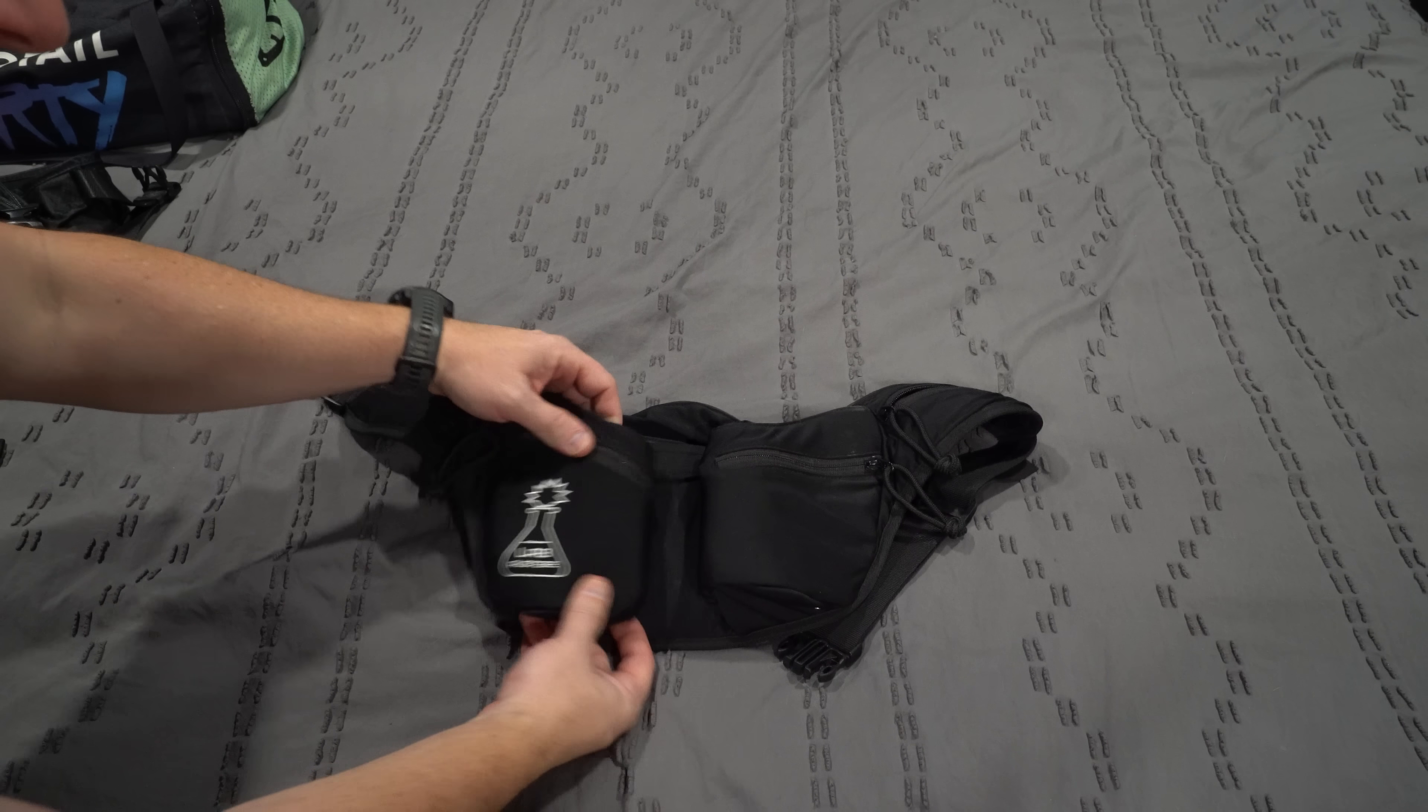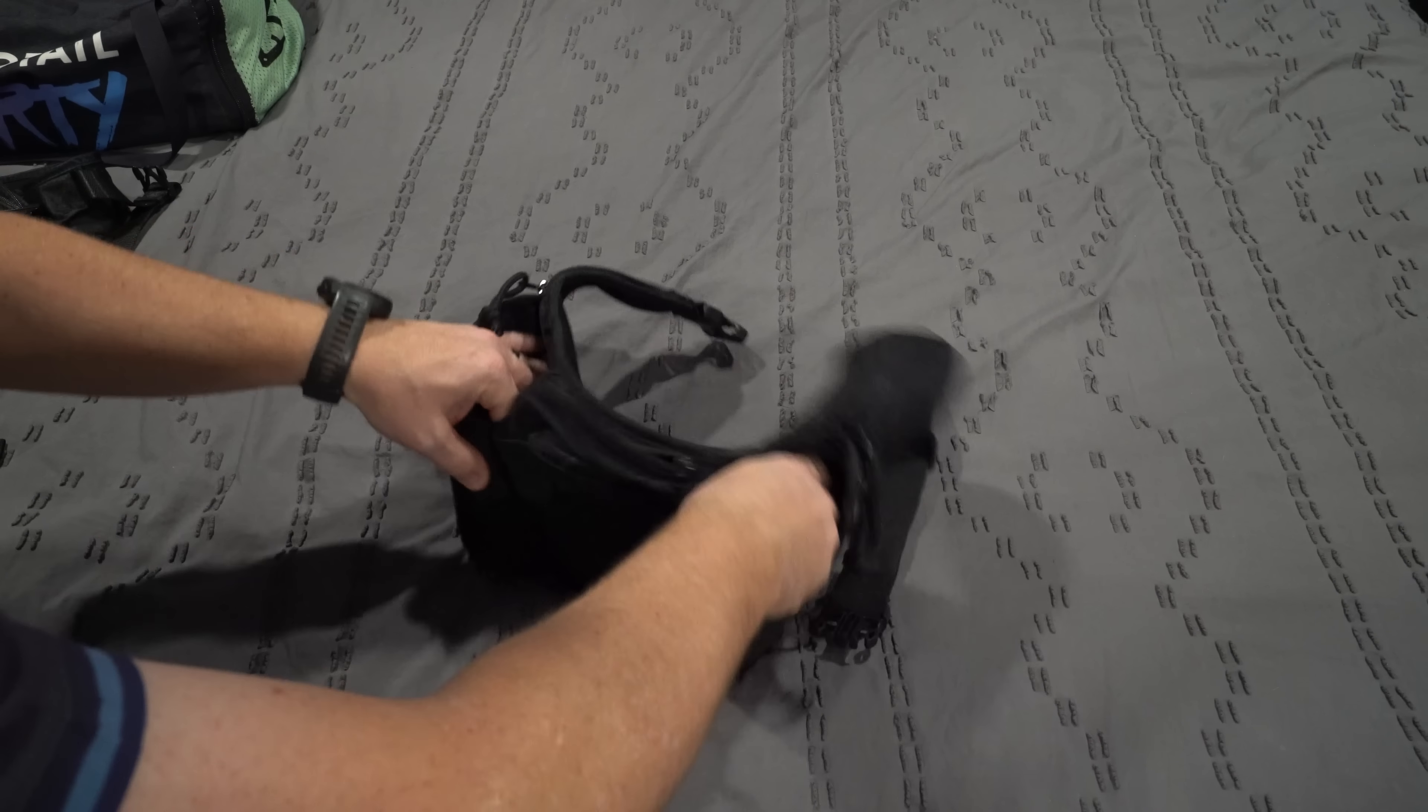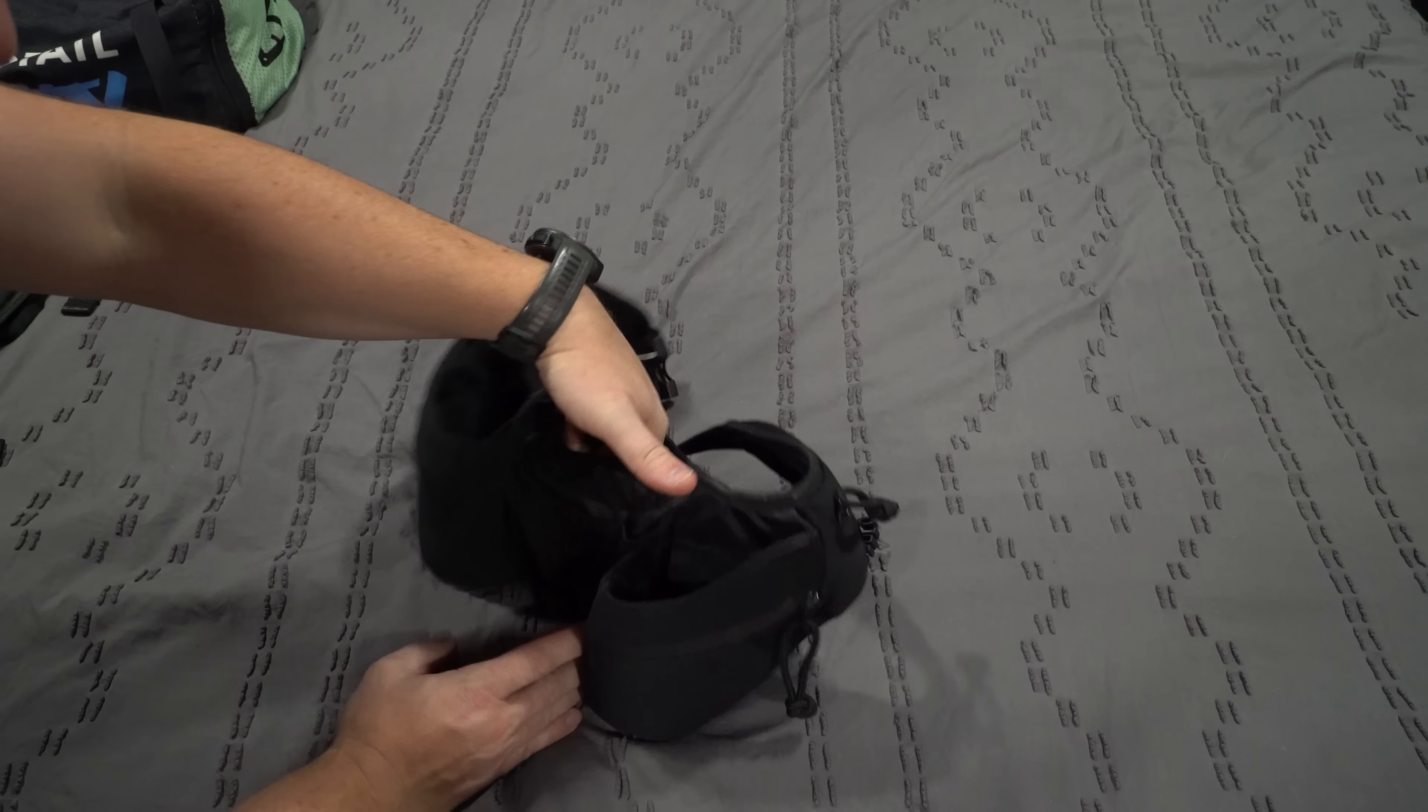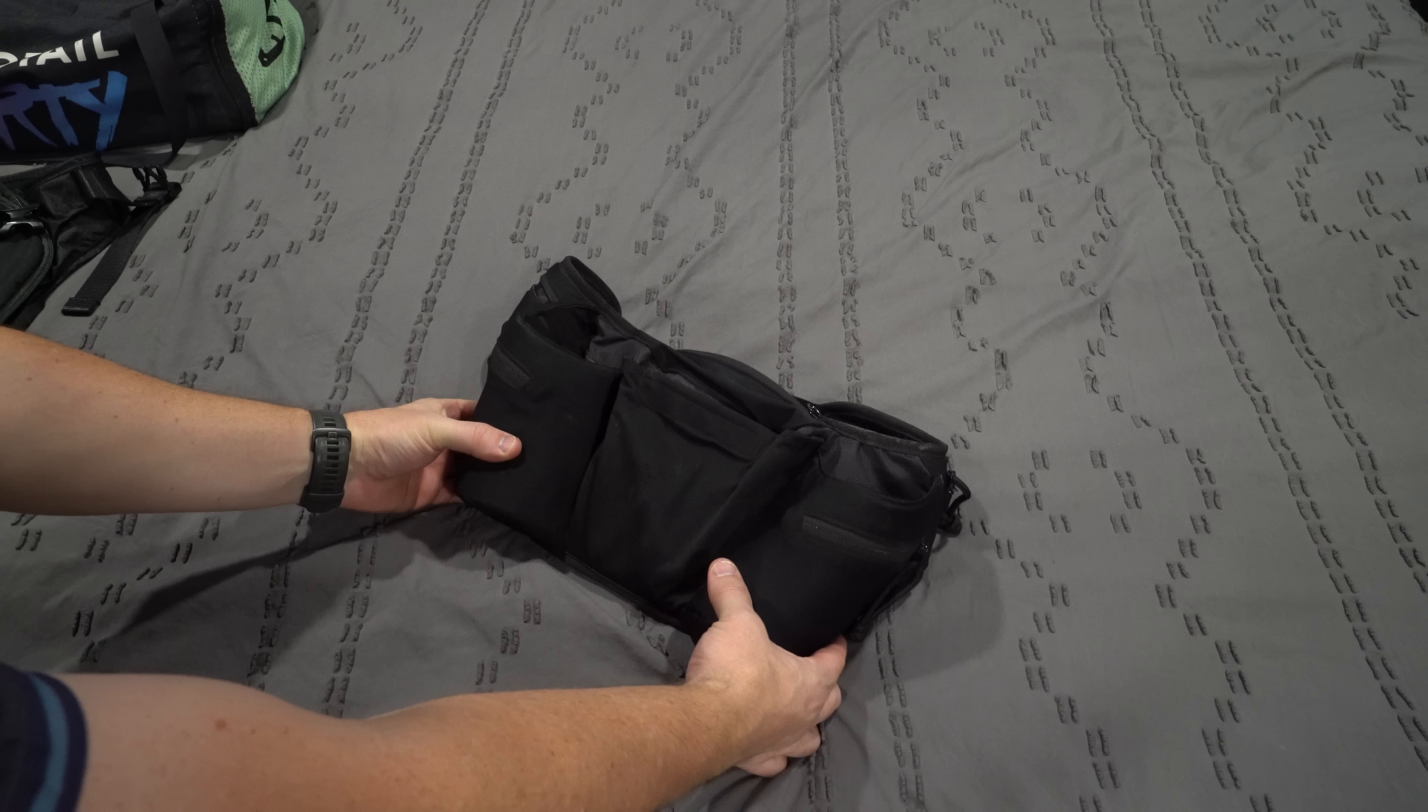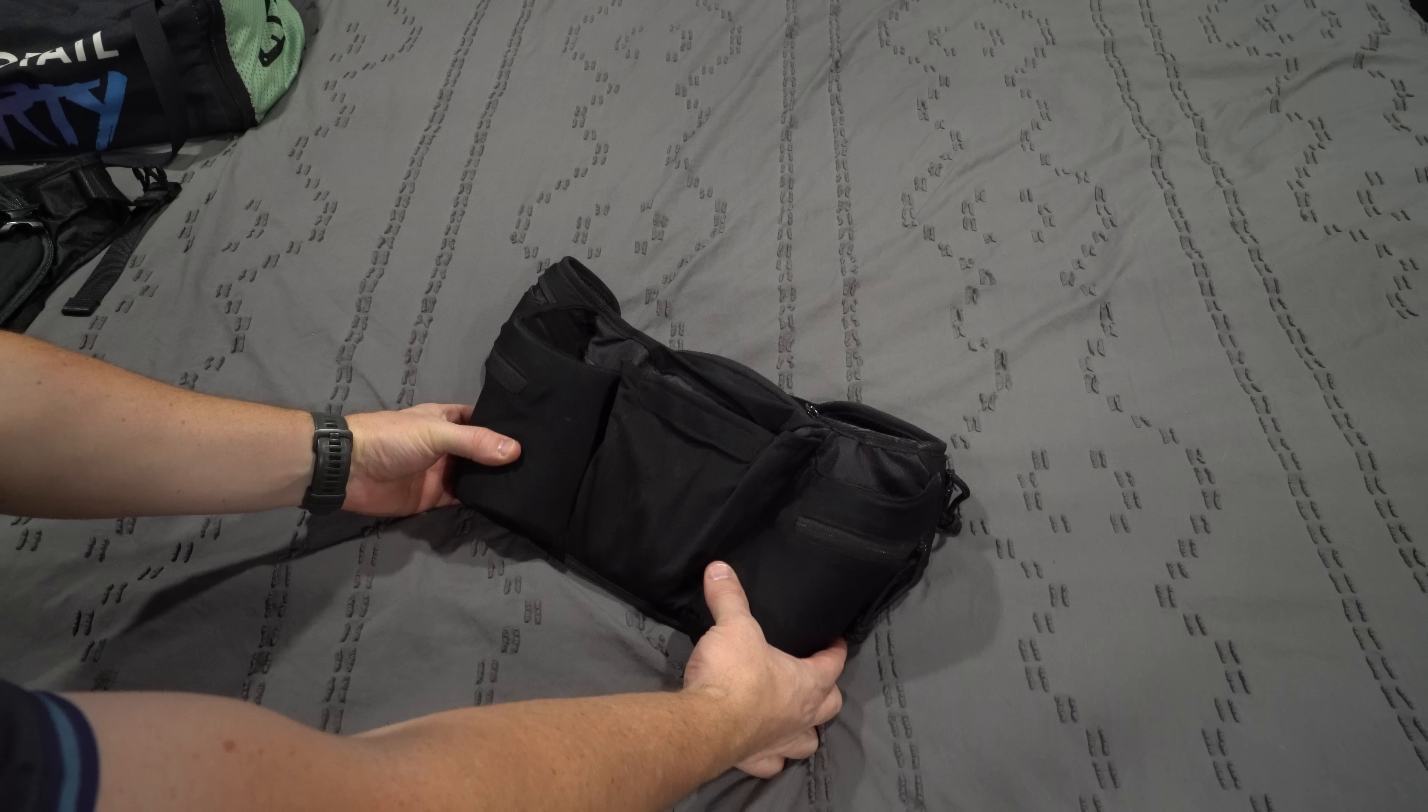Finally, I've got this Lab Austere hip pack. I've got a link and discount code in the description below. It fits two full-size water bottles in here. So I can carry almost two liters in here. So when I combine that with the bottle on my frame, I can get away with carrying quite a bit of water.